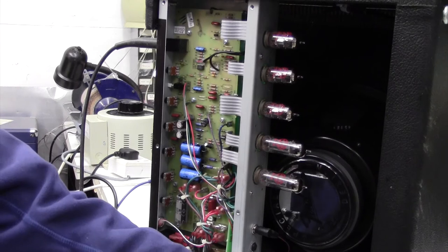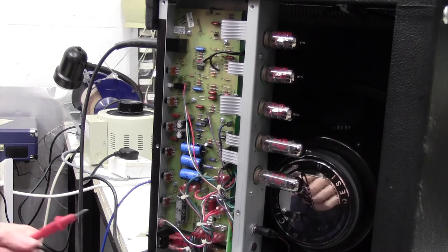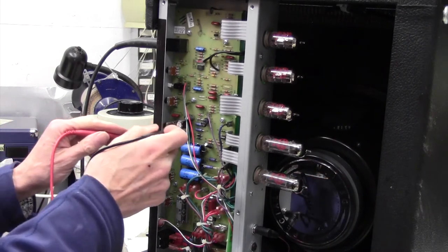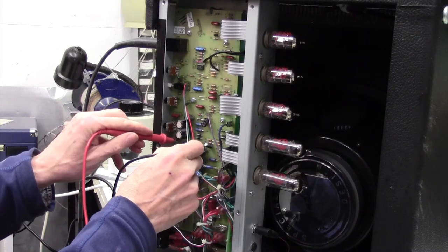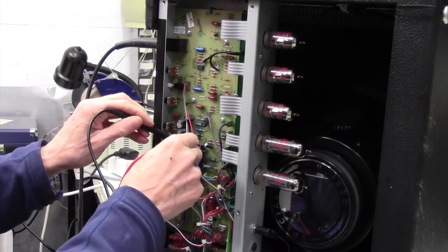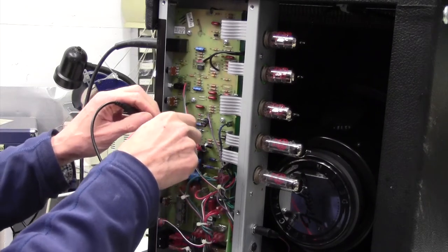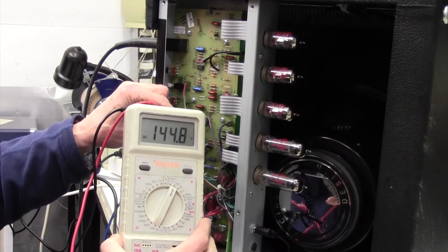Whilst we're just waiting for things to warm up, I'm just going to get my meter and see if we are getting any HT on these caps here, because the HT should be slowly coming up. Oh yes, we've got 145 volts there. We've got 145 volts, which is about what I'd expect at half voltage on the variac.